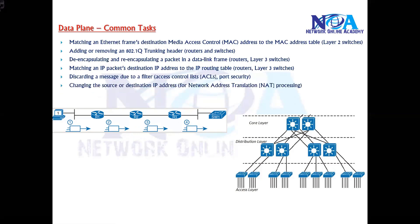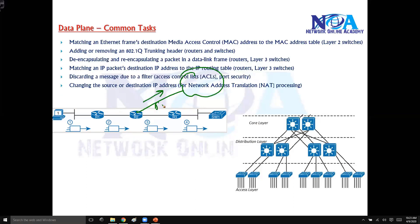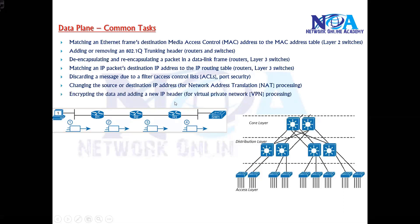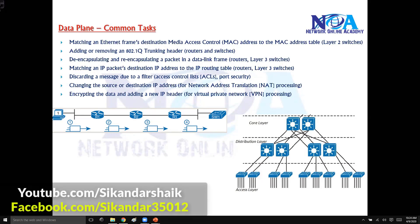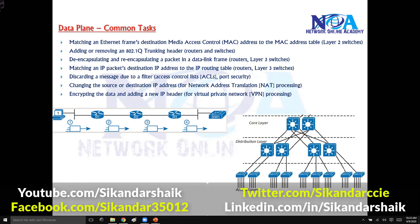If you're using NAT to connect to the internet, source or destination IP addresses are changed — that is another data plane task. Similarly, if you're setting up a VPN over the internet, such as an IPSec VPN, you encrypt the traffic so it cannot be seen by anyone — that is also a data plane task. In summary, any forwarding task that a device performs comes under the data plane.